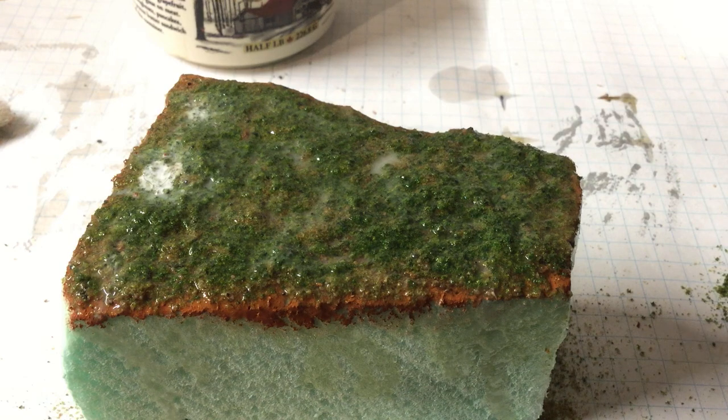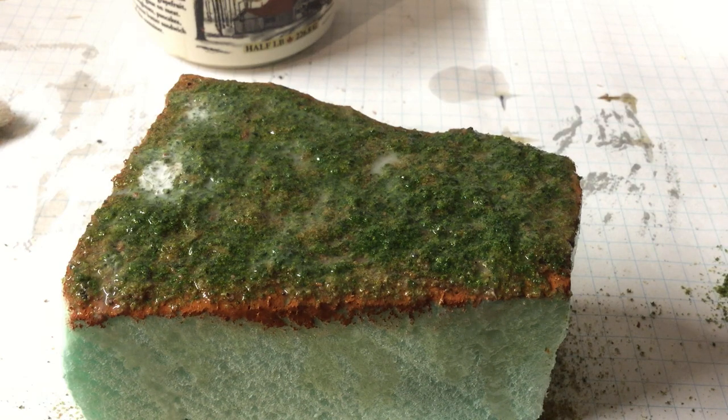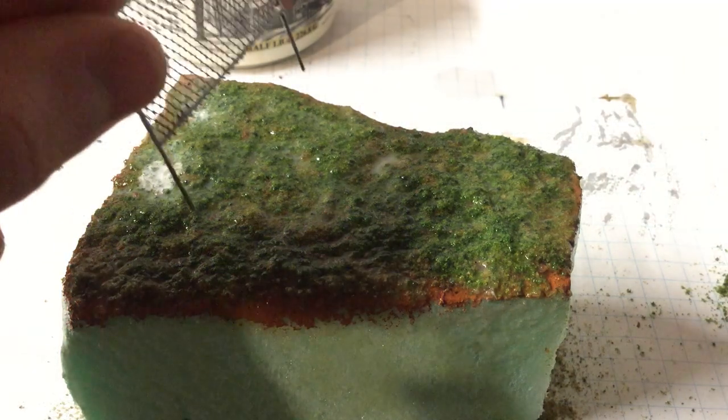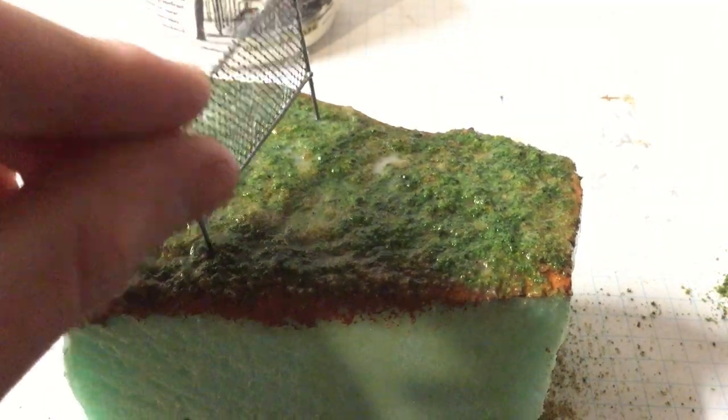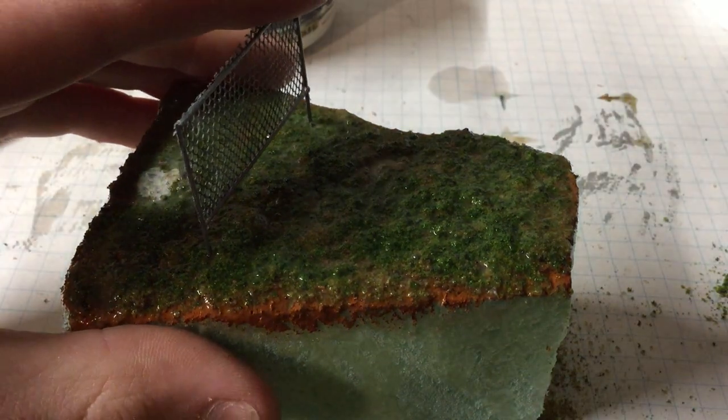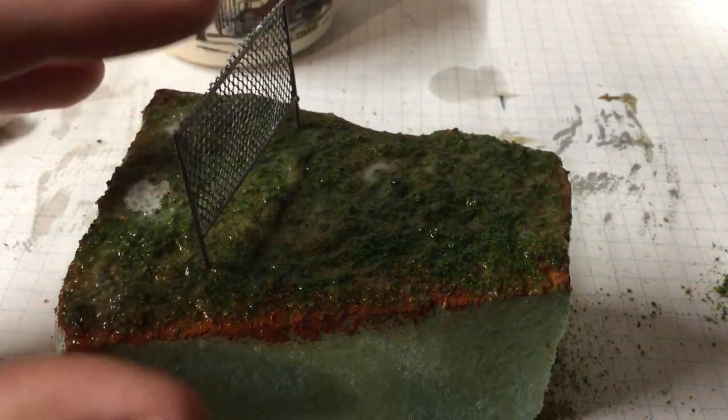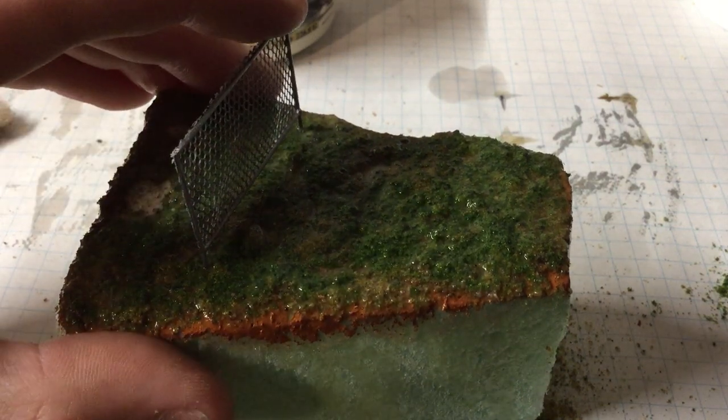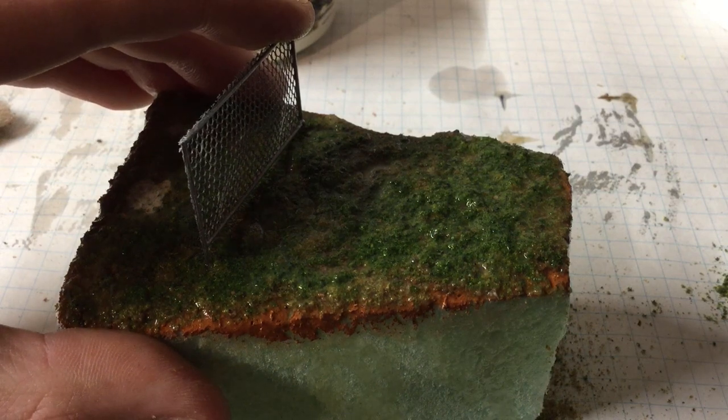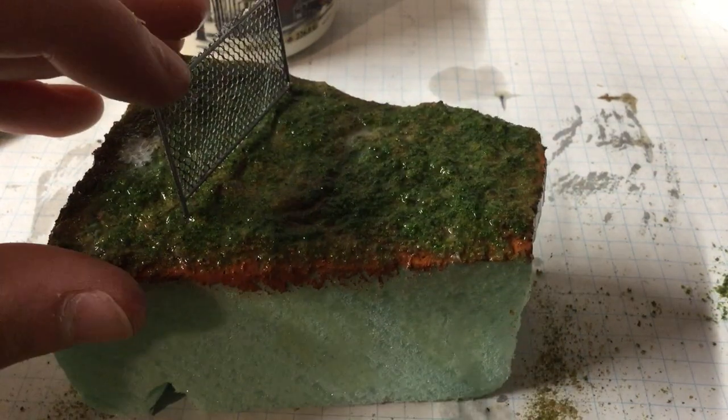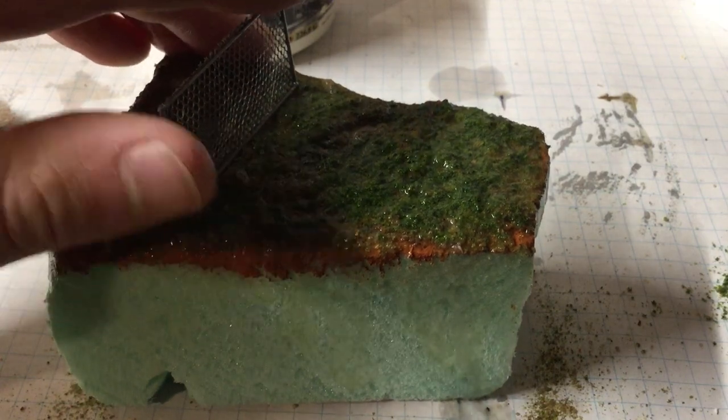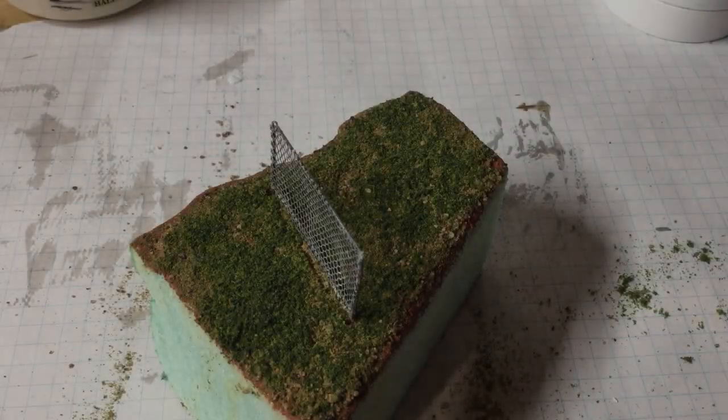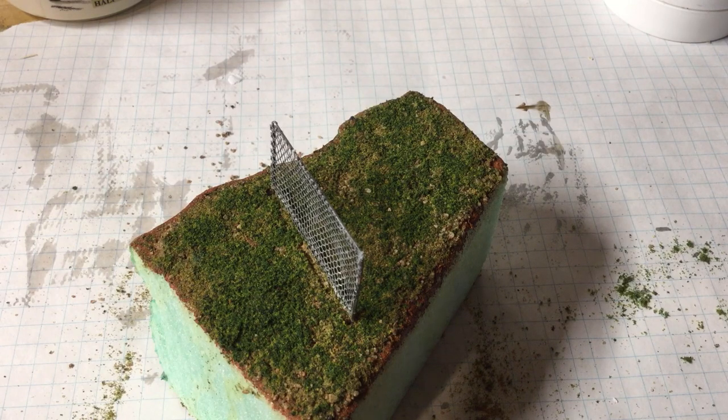So here I have my foam diorama, which I just put some ground foam on and I soaked it in alcohol and glue. And now installing the fence is as simple as hooking those two wires right into the foam. And as the scenery dries, the fence will glue right in there.